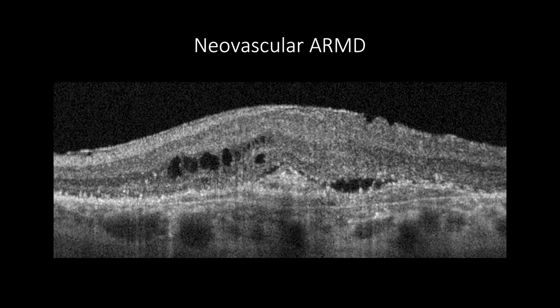When OCT shows subretinal fluid, it is a sign of active CNV. It may have favorable visual prognosis when compared to intraretinal cystic changes, which may not always feature an active disease unless combined with increased macular thickness, and hold poor visual prognosis.